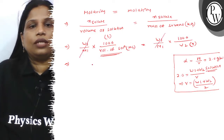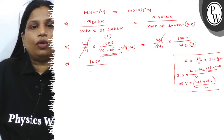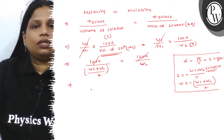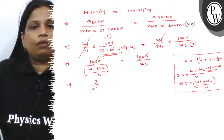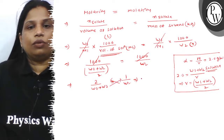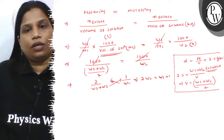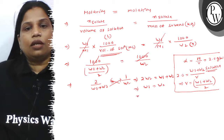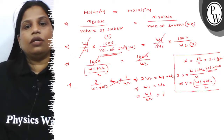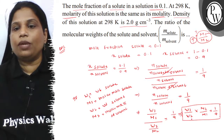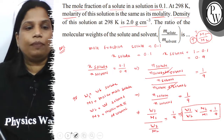After substituting the volume value and cancelling terms, 1000 divided by volume (W1 plus W2 divided by 2) equals 1000 divided by W2. This simplifies to 2 divided by W1 plus W2 equals 1 by W2. Cross-multiplying gives 2W2 equals W1 plus W2, so W1 equals W2. Therefore, W1 by W2 equals 1.